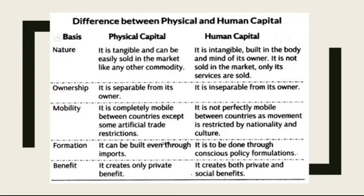The next basis is ownership. Physical capital is separable from its owner, whereas human capital is inseparable from its owner. Third, mobility: physical capital is completely mobile between countries except for some artificial trade restrictions, whereas human capital is not perfectly mobile between countries as movement is restricted by nationality and culture.